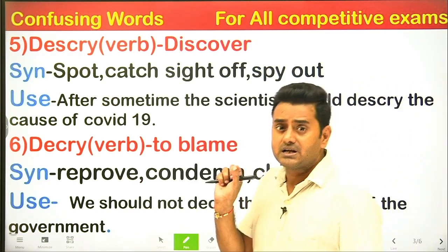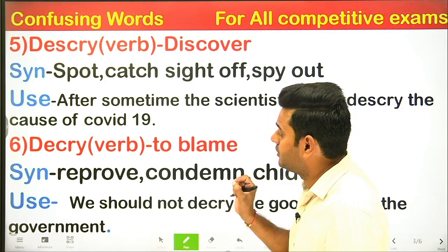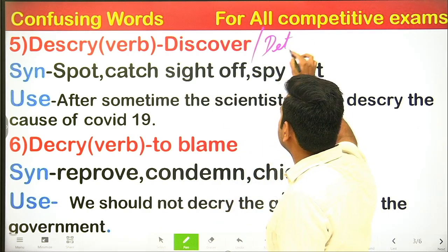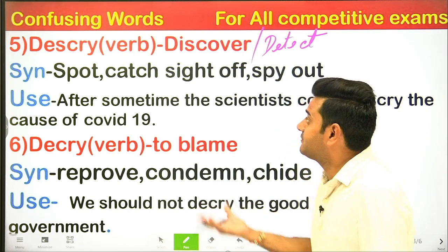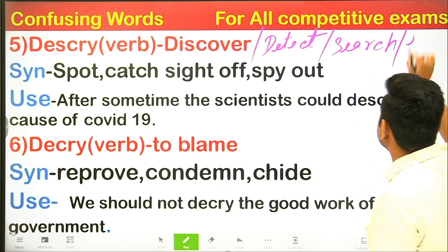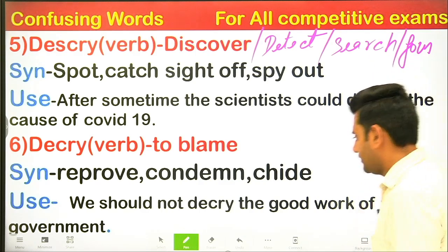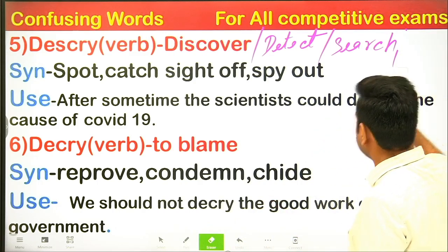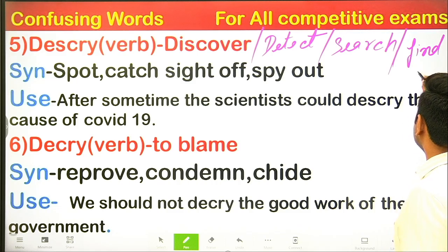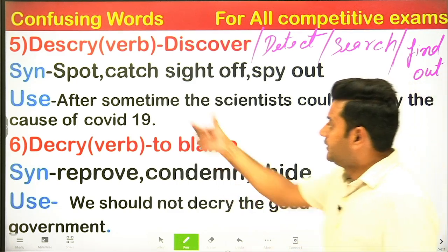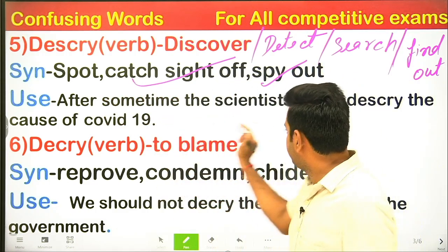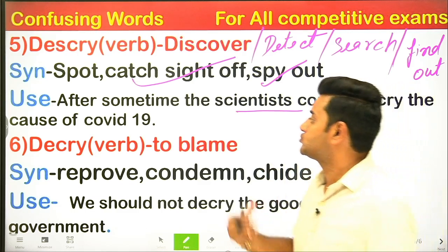Next words: 'descry' and 'decry' — both are very good words. Descry means to detect, discover, search, find out, spot, catch sight of, or spy out. Example: 'After some time the scientist could descry the cause of COVID-19.' Meaning: After some time, the scientists were able to detect and discover the cause of COVID-19.